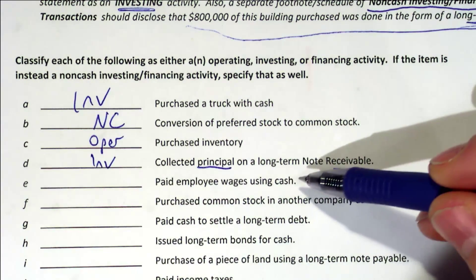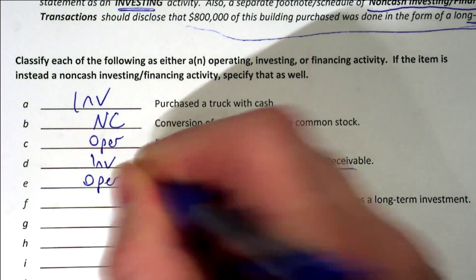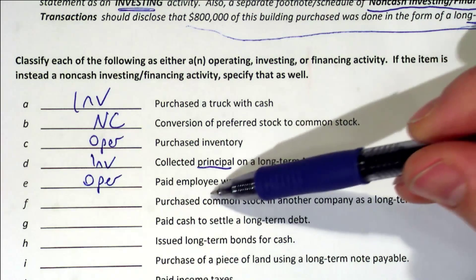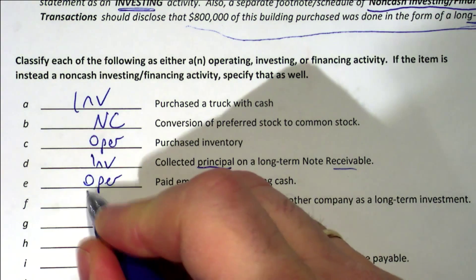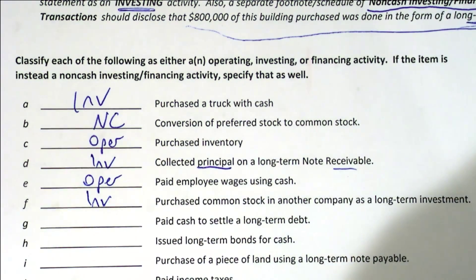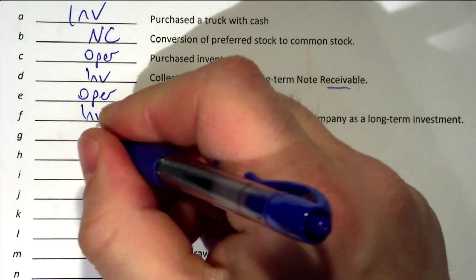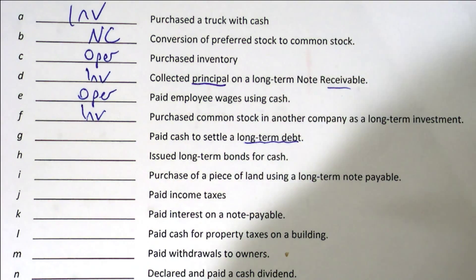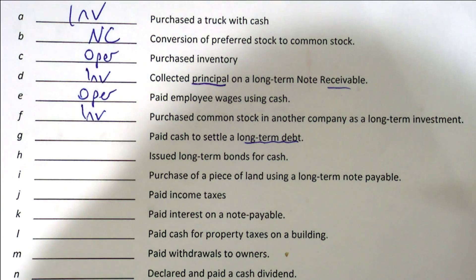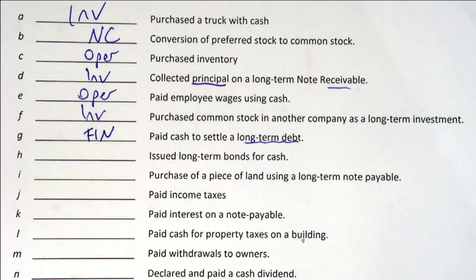Paid employee wages using cash — that's operating. Purchased common stock in another company as a long-term investment — that would be an investing activity. Paid cash to settle a long-term debt — that's a financing activity. Even though it's long-term debt, when we pay cash to settle a debt it is financing.